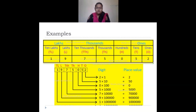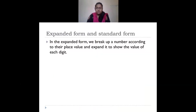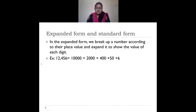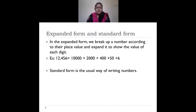We also saw different examples for place value, then expanded form and standard form. Expanded form is when you break a number according to its place value. So 12,456 in expanded form is 10,000 plus 2,000 plus 400 plus 50 plus 6. Standard form is the usual way of writing numbers — when you add up an expanded form you get the standard form. For example, 20,000 plus 4,000 plus 300 plus 20 plus 5 gives the standard form 24,325.